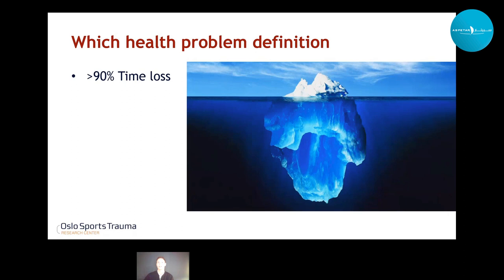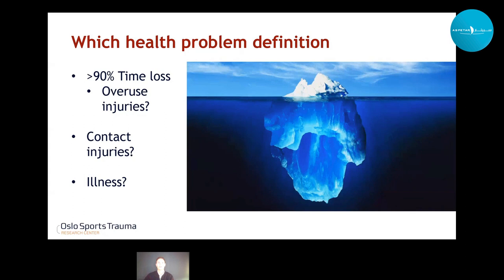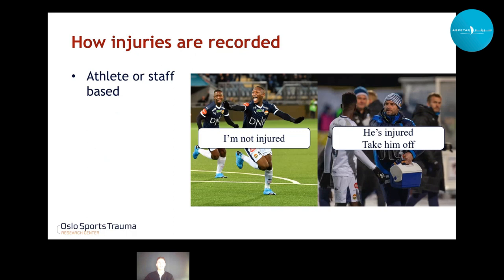Next is a large difference in which health problem definition is used. More than 90% of the studies used time-loss definitions, meaning they are unlikely to capture all overuse injuries. There's also discussion about whether contact injuries should be included — some studies included them, some did not. And a really difficult discussion is whether to include illnesses: some included illness as a health problem whereas most only analyzed injuries. Another important point is whether injuries were registered directly by the athletes or by staff, and if staff, how research-trained they were.